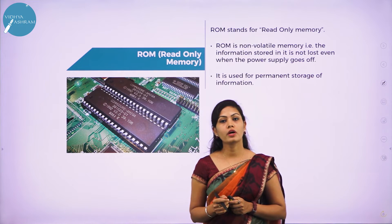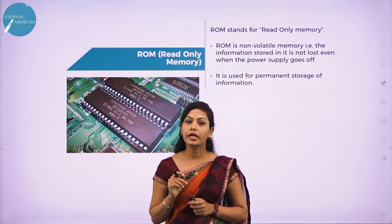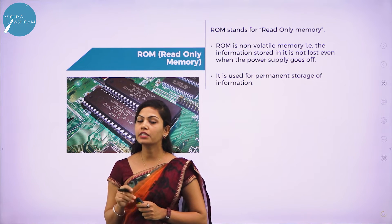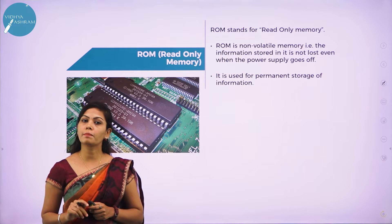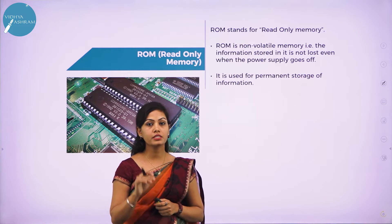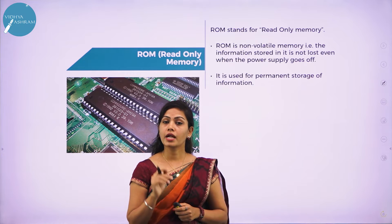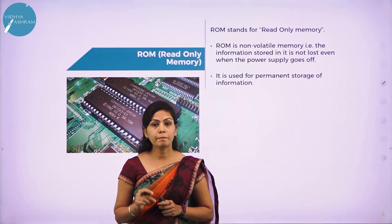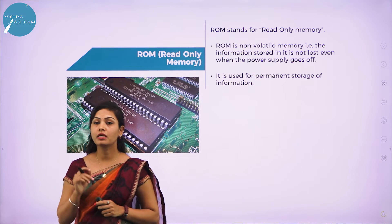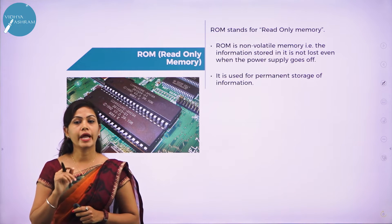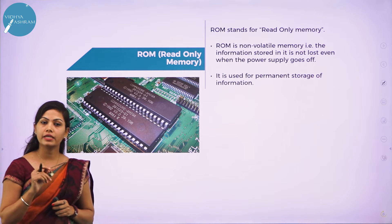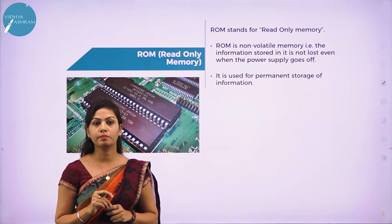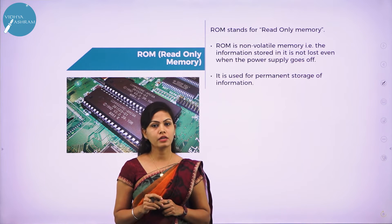ROM stands for read only memory. ROM is a permanent type of memory — its content is not lost when the power supply is switched off, so it is non-volatile memory, whereas RAM is volatile memory. The computer manufacturer decides the information stored in ROM, and it is permanently stored at the time of manufacturing, which cannot be overwritten by the user.